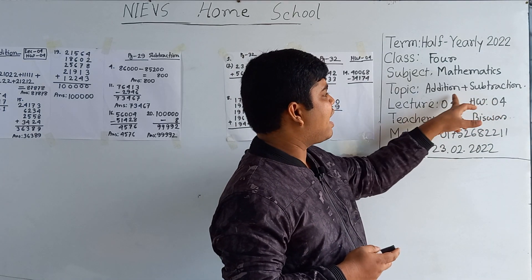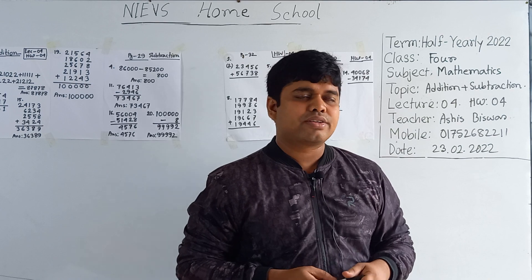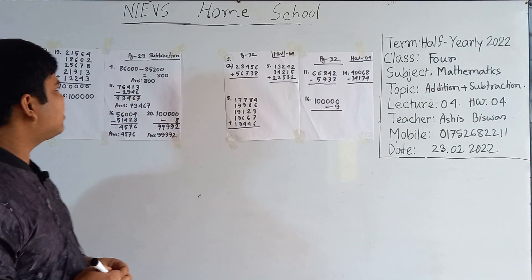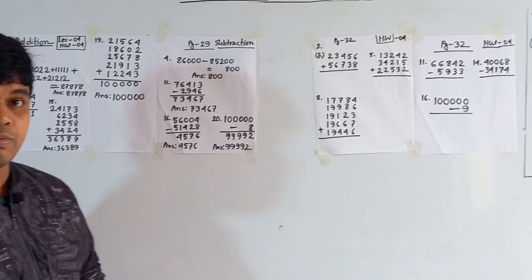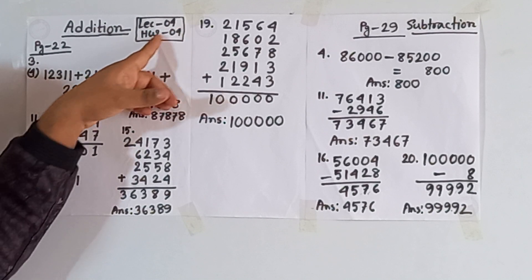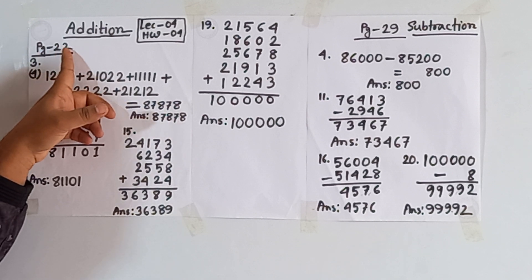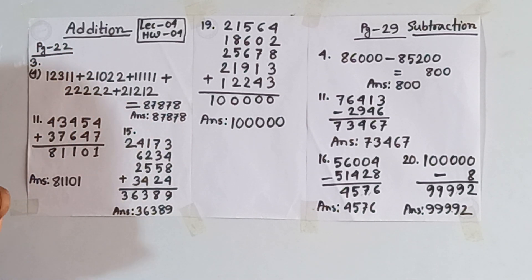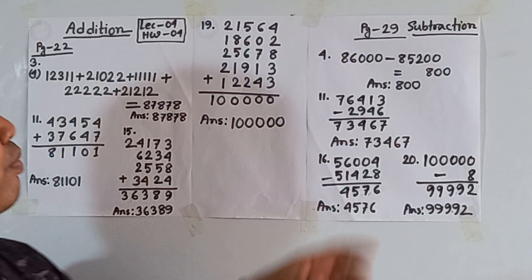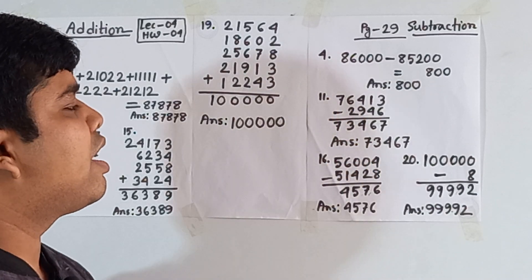Our today's topic is Addition and Subtraction, taken from Chapter Two. The name of Chapter Two is 'Addition and Subtraction.' From the chapter, we will first solve addition and subtraction, and after that I will give you some problems as your homework. From your EMB book, page number 22, we shall solve question number three — specifically questions four, eleven, fifteen, and nineteen as your classwork. Also from page number 29, we shall solve questions four, eleven, sixteen, and twenty as your classwork.